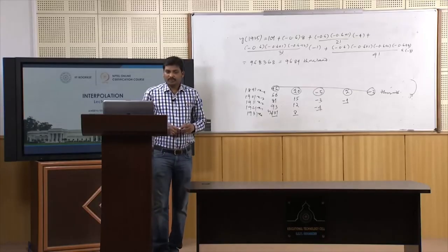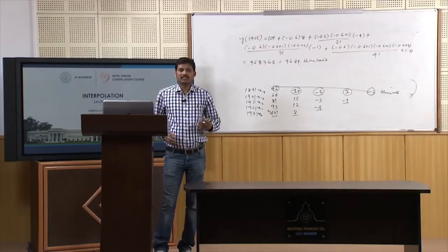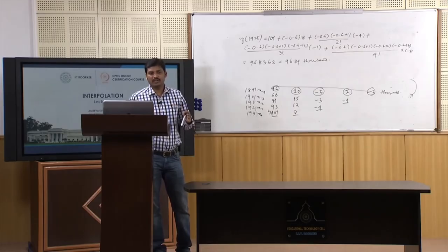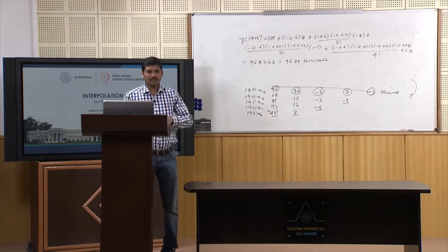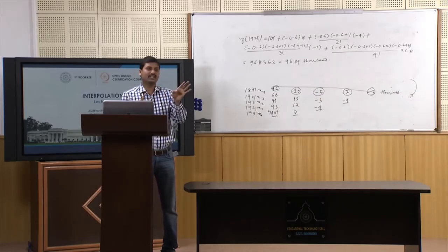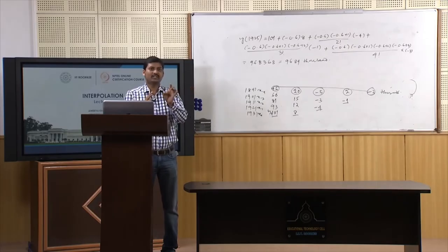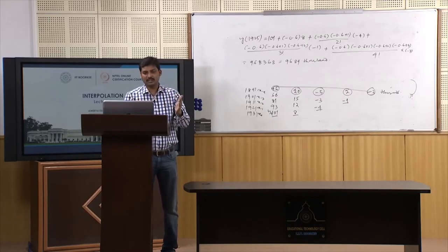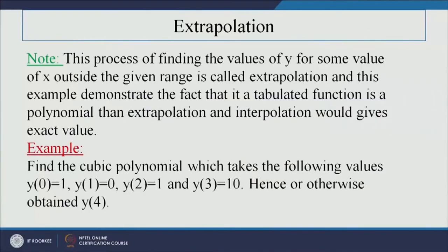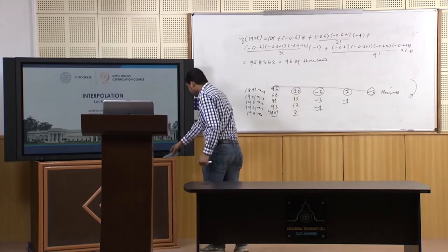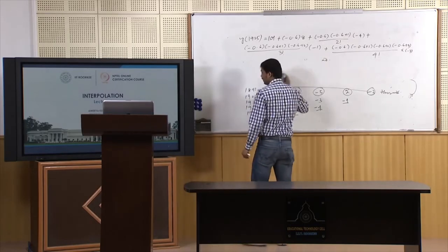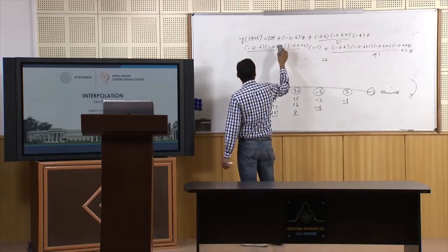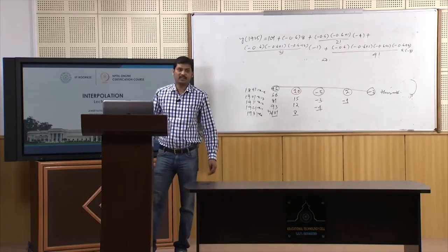Next we discuss extrapolation. Sometimes the value to be found exists outside the table — this is called extrapolation. The process of finding values outside the tabular range uses the existing data to find preceding or succeeding values, whether future or past data. If the value is computed inside the table, it is called interpolation.